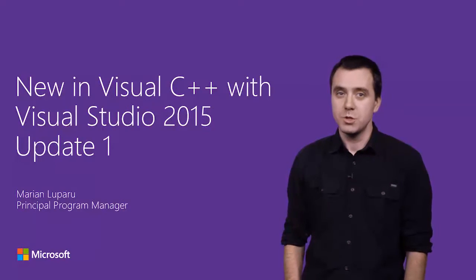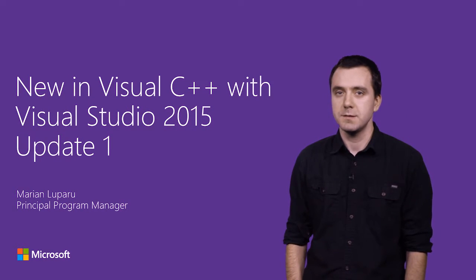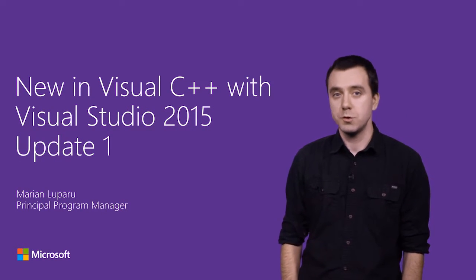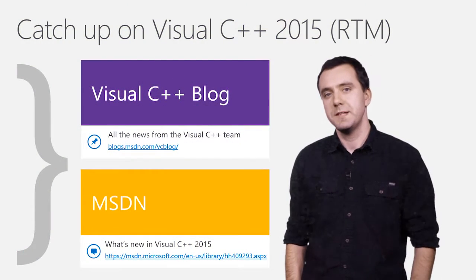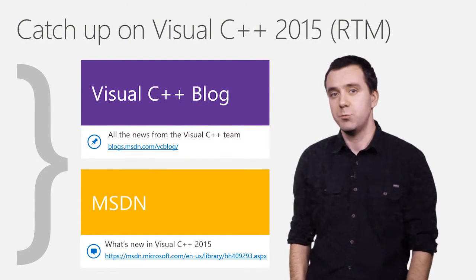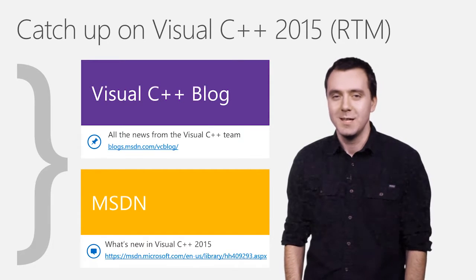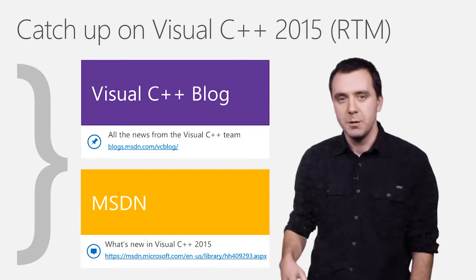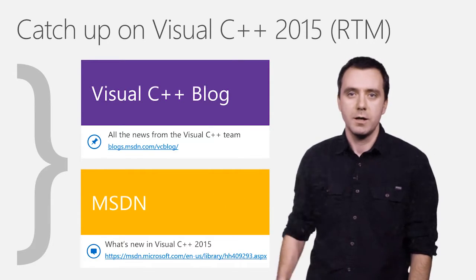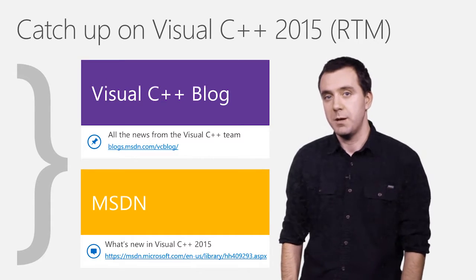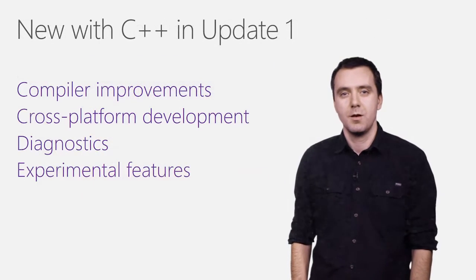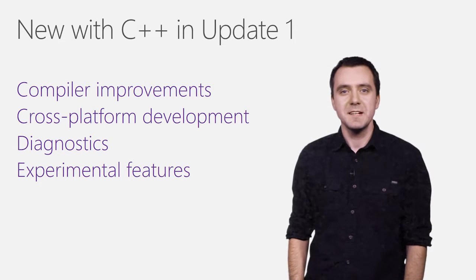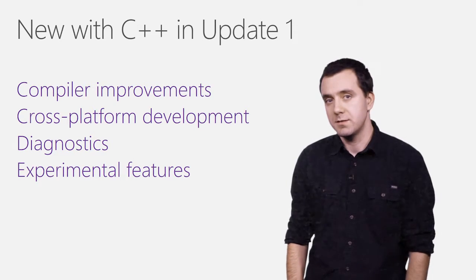Hello, and welcome to a short video on what's new in Visual C++ with Visual Studio 2015 Update 1. This video will describe the delta from the RTM release launched in July. To get more familiar with the RTM release, please check out our blog and the MSDN topic. With Update 1, we've made significant improvements in the following general areas.